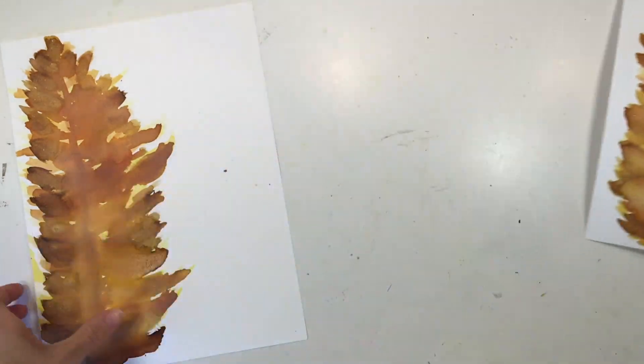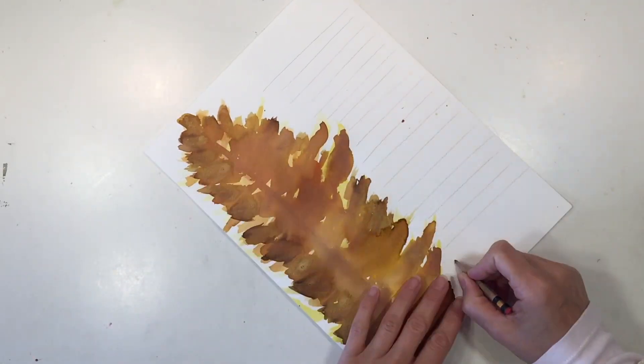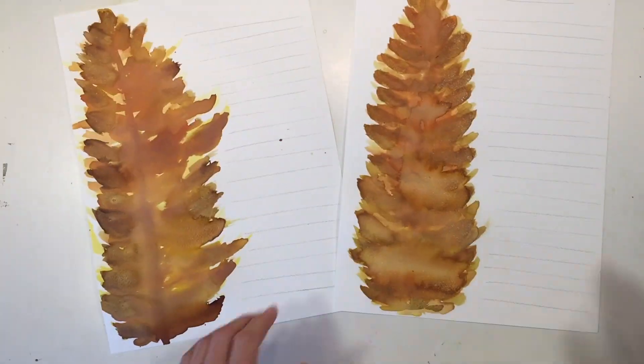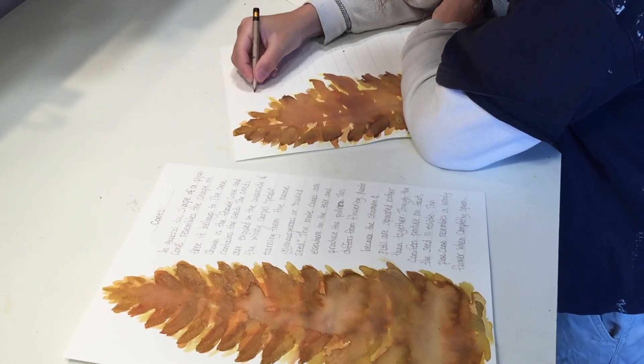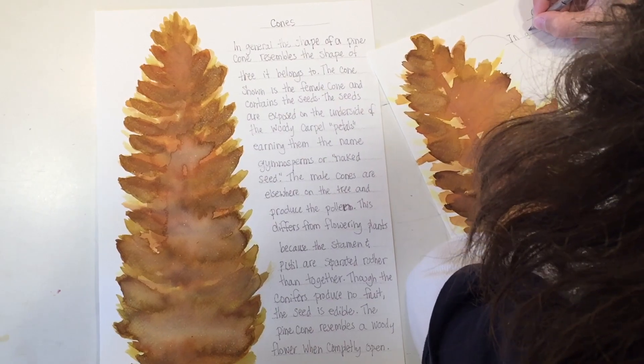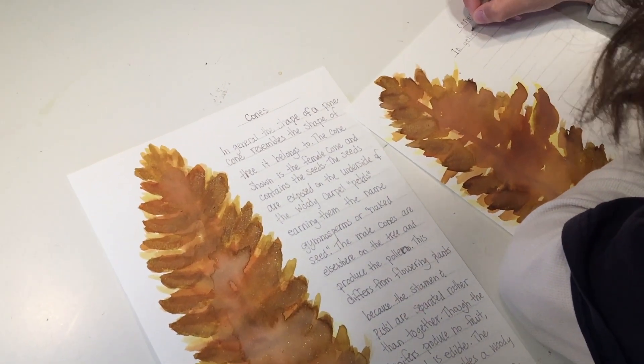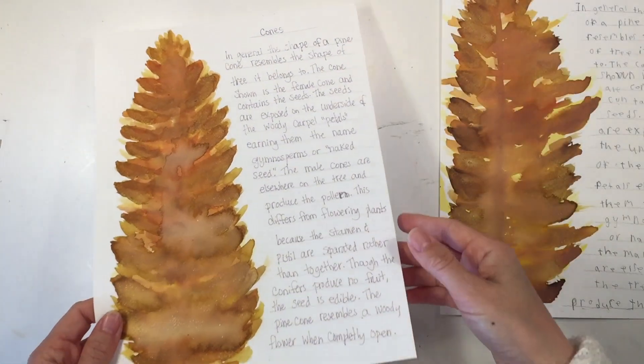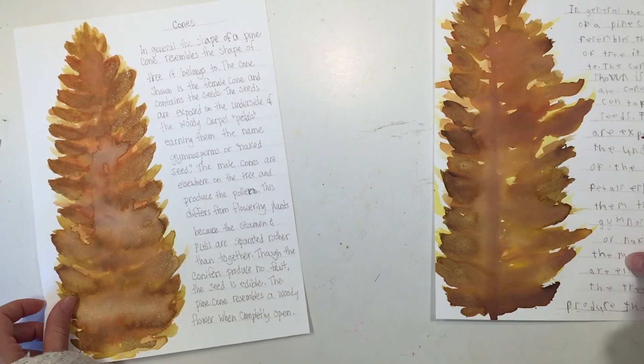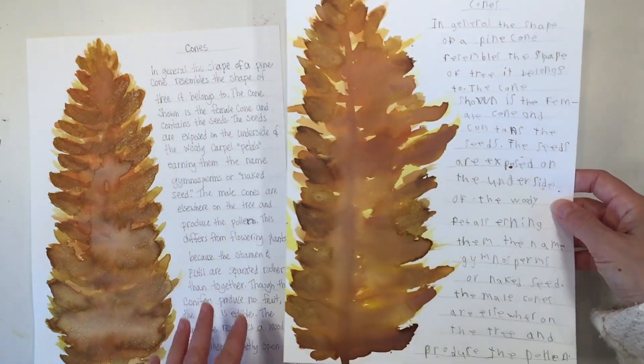The last thing we want to do for this project is add the lines and the narration. My son decided that he would rather do copy work for this one. So I went ahead and I wrote some information about pine cones, and then he copied whatever will fit on his page. This is what it looks like when it's done.